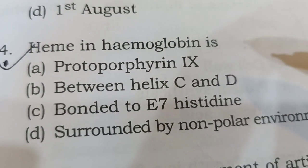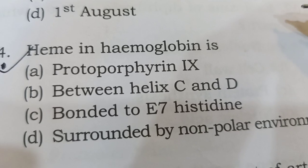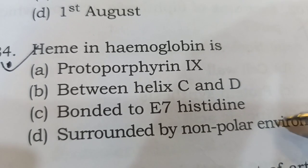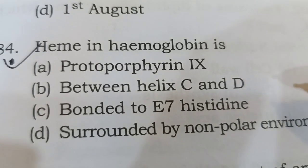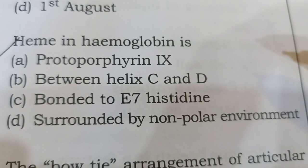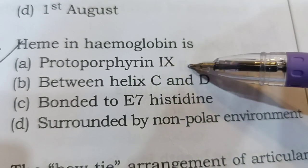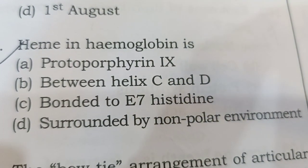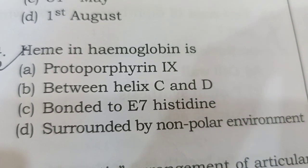Next question: Heme in hemoglobin is. Your options are: A) Protoporphyrin 9, B) Between helix C and D, C) Bonded to E7 histidine, or D) Surrounded by non-polar environment. The most probable and correct answer is option A, Protoporphyrin 9. Heme in hemoglobin is nothing but Protoporphyrin 9.